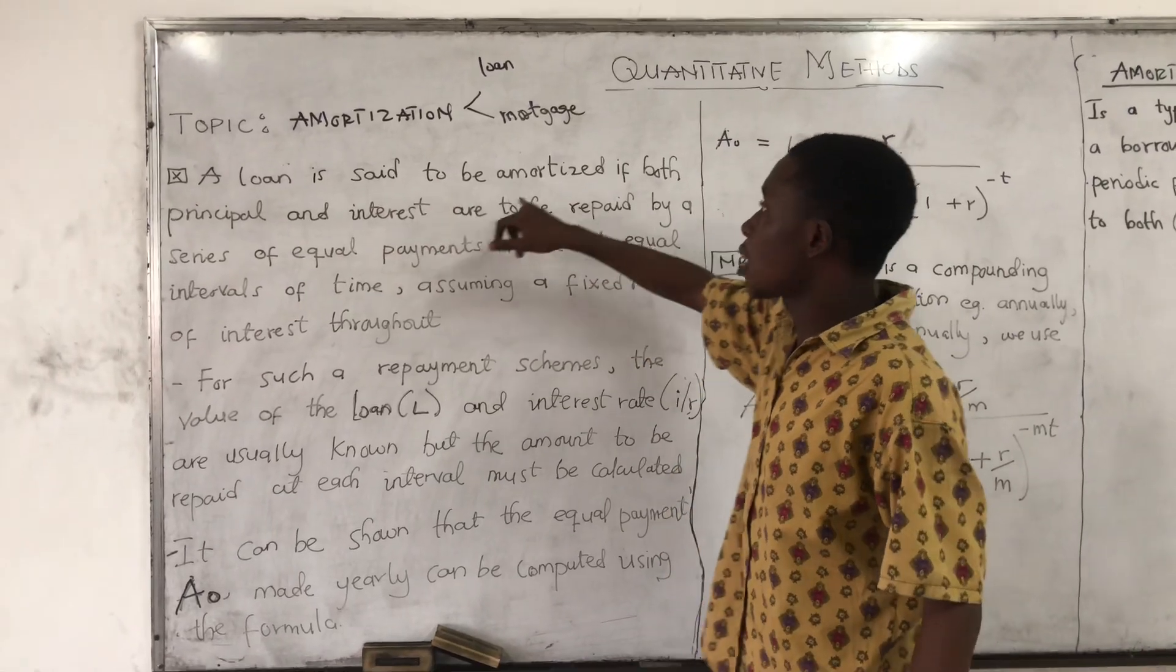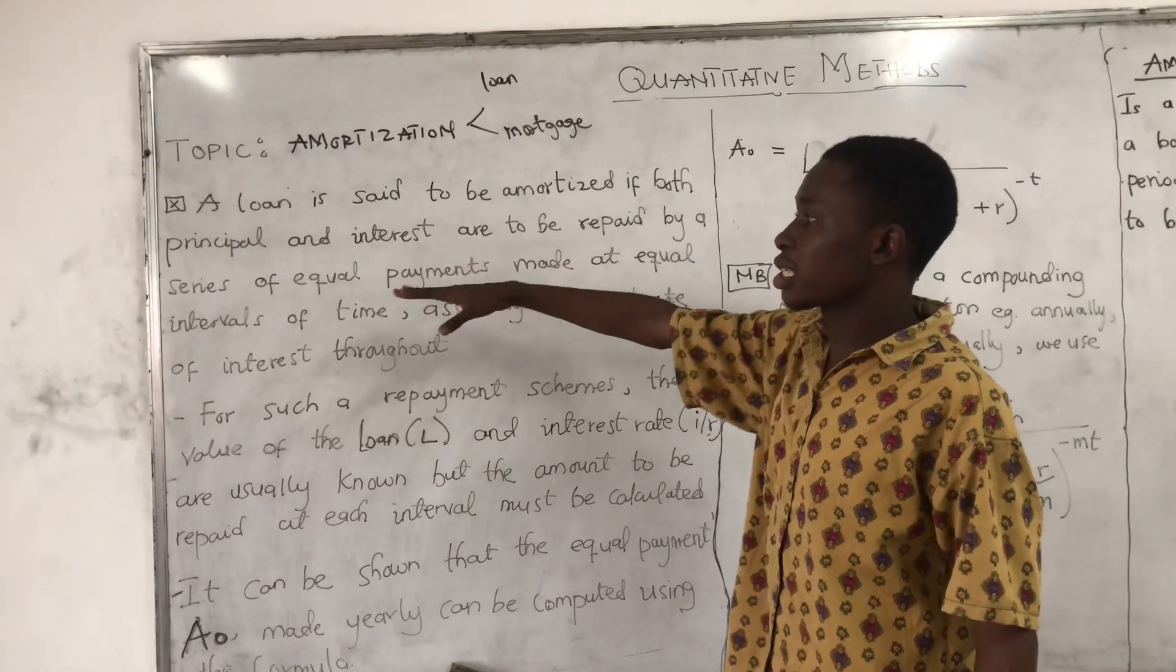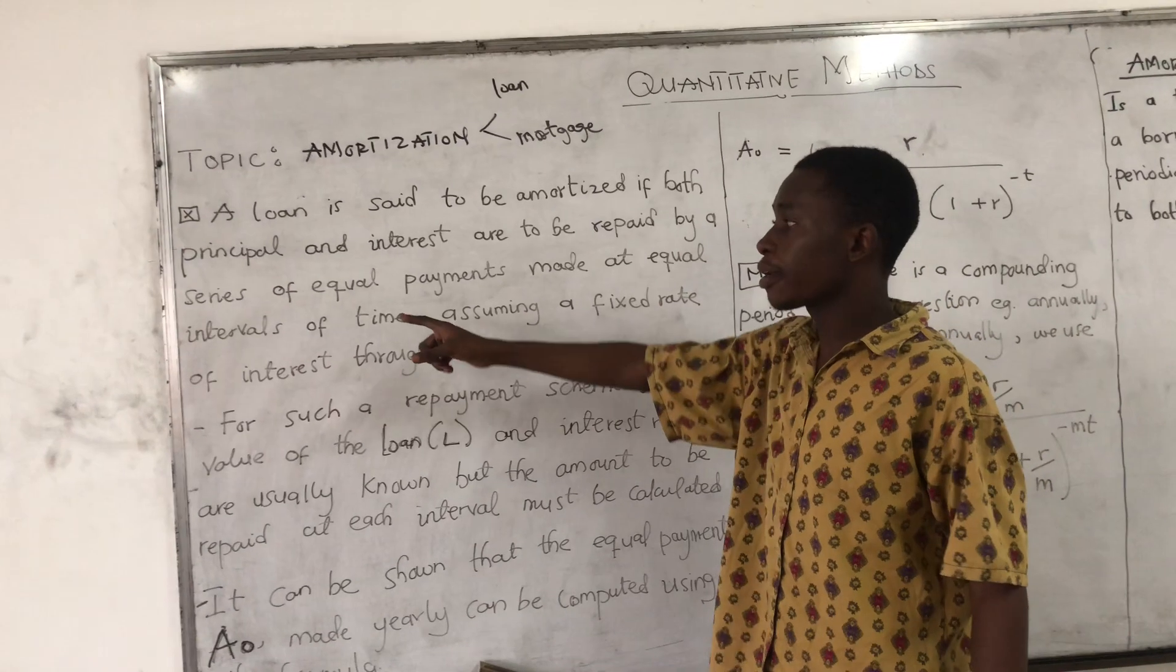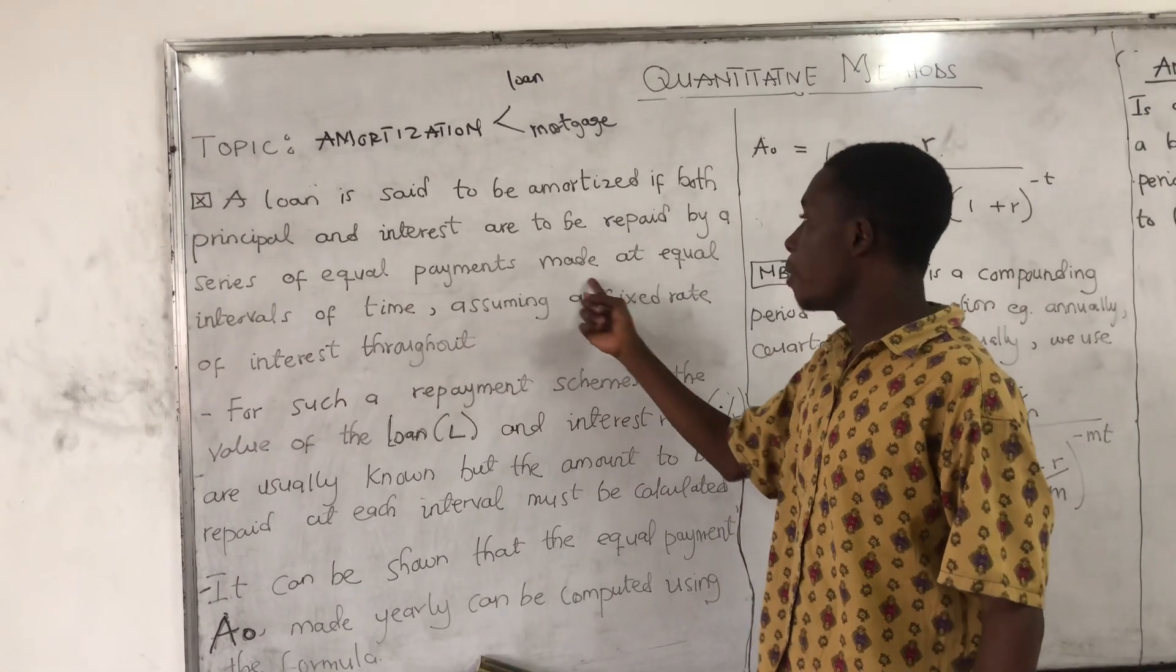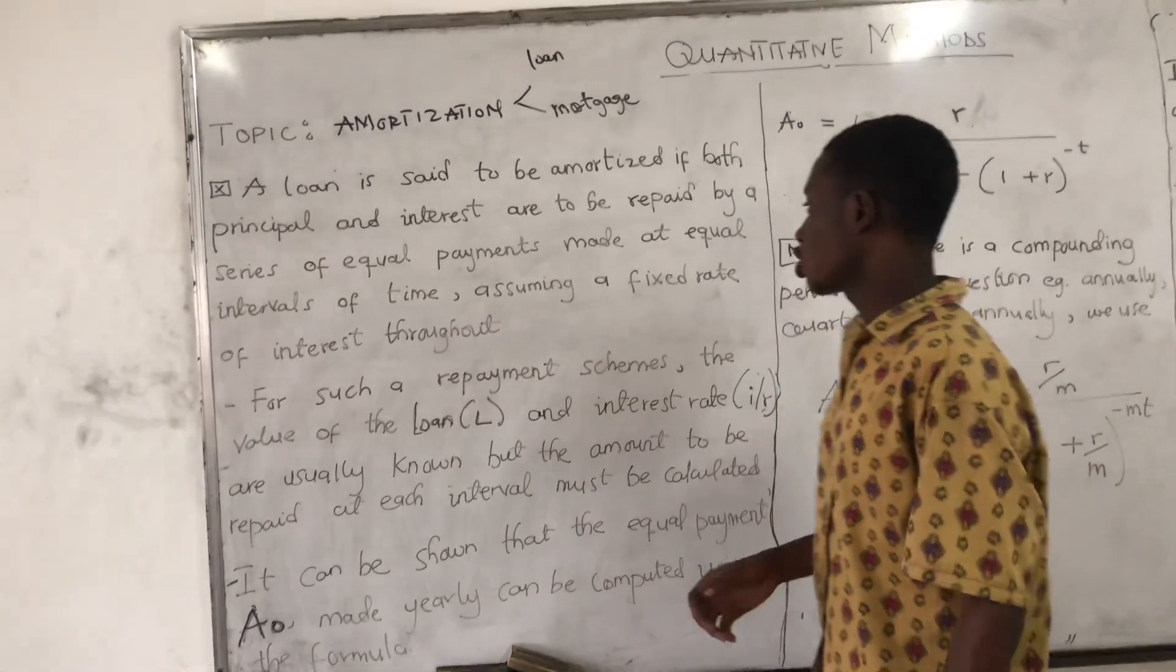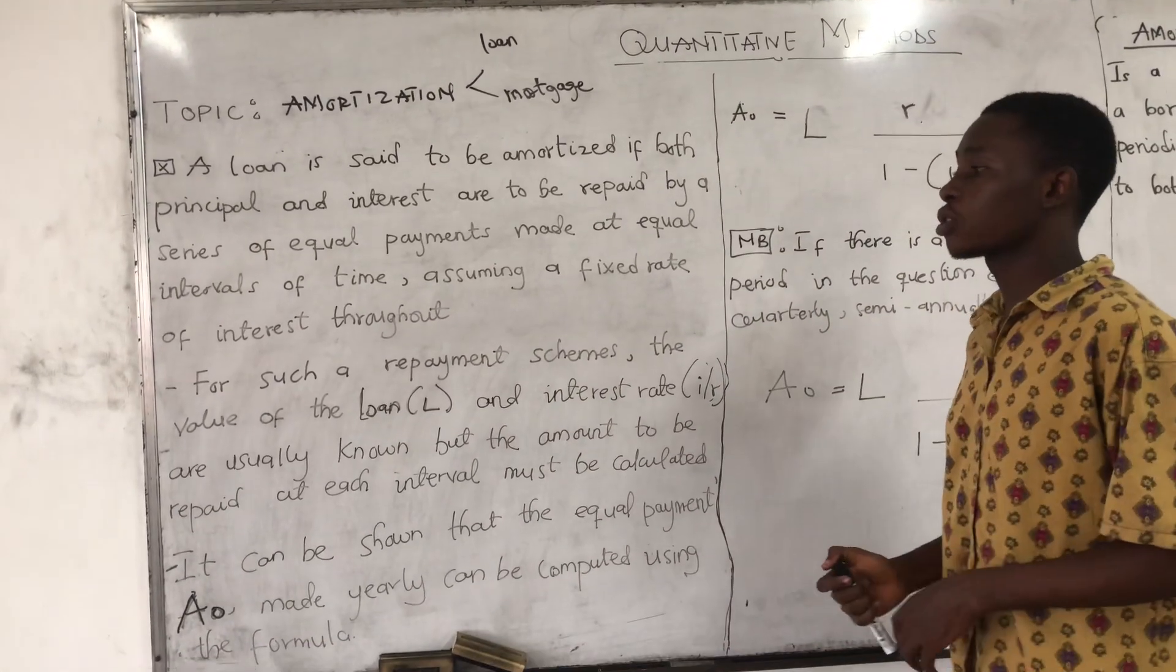Now, a loan is certainly amortized if both principal and interest are to be repaid by a series of equal payments made at equal intervals of time, assuming a fixed rate of interest throughout.